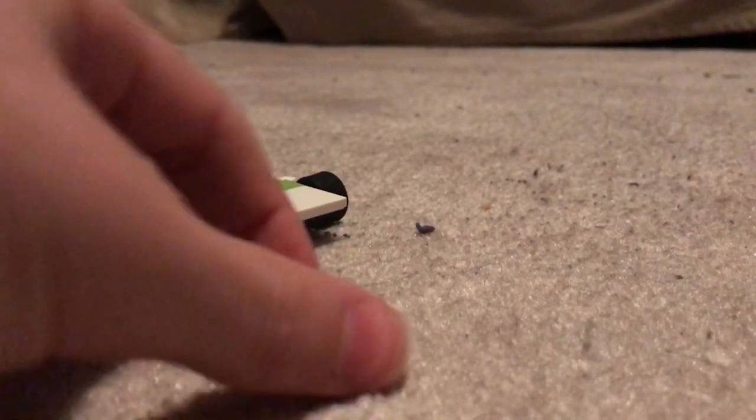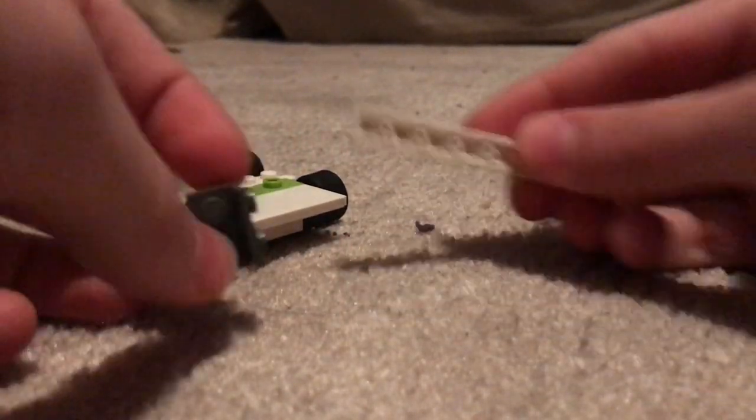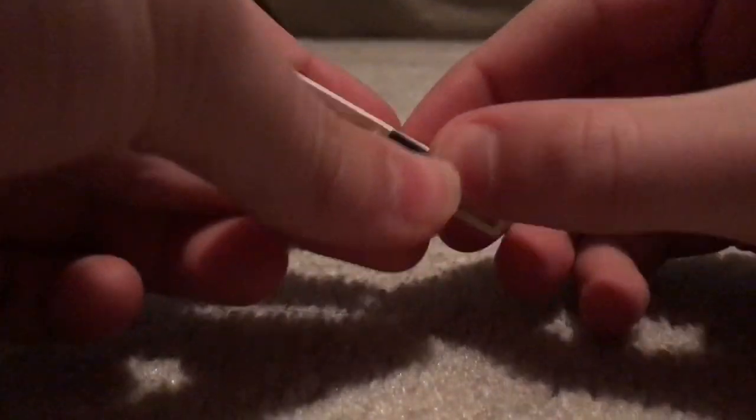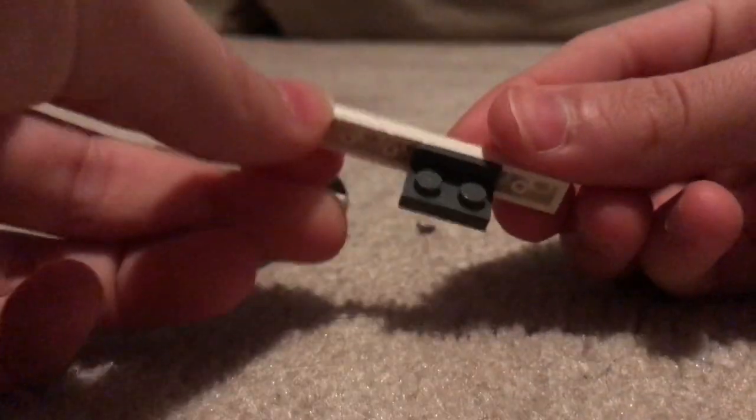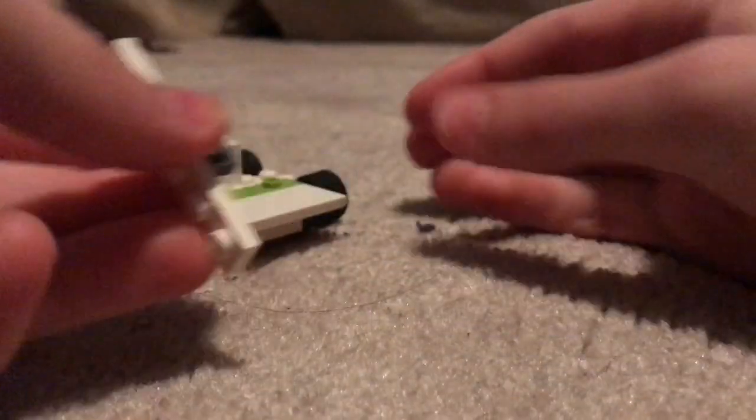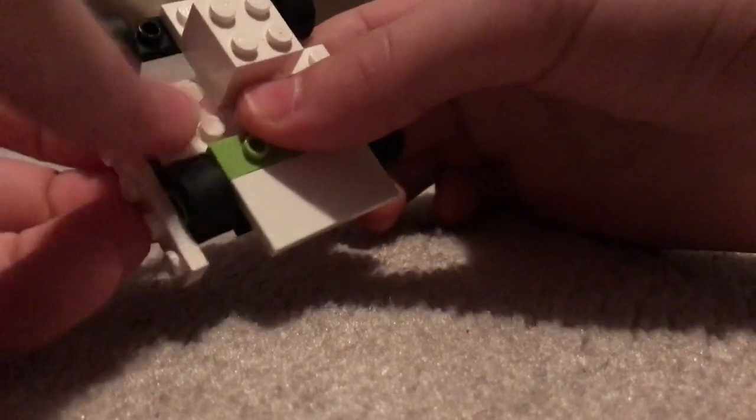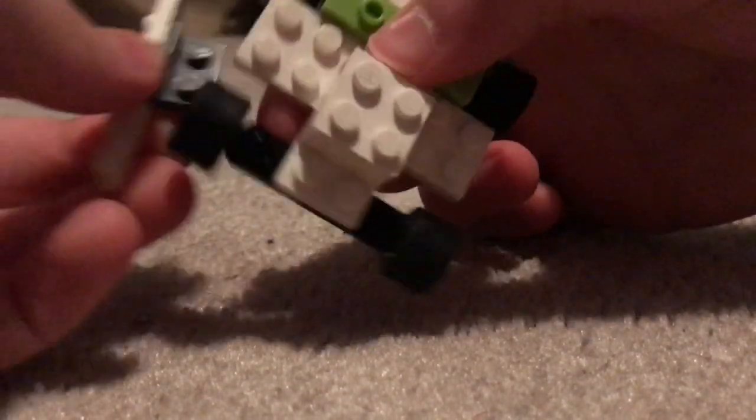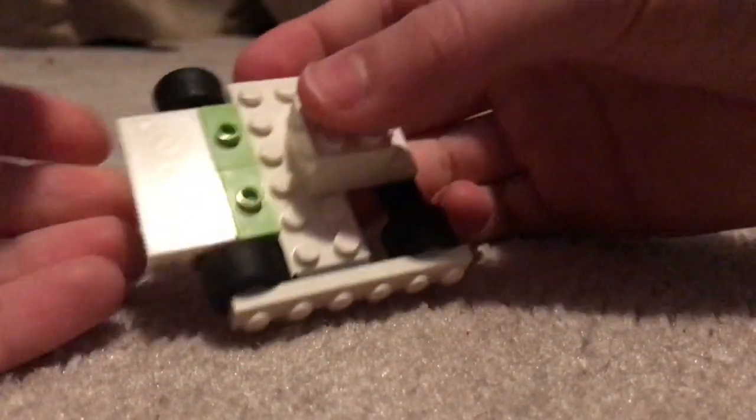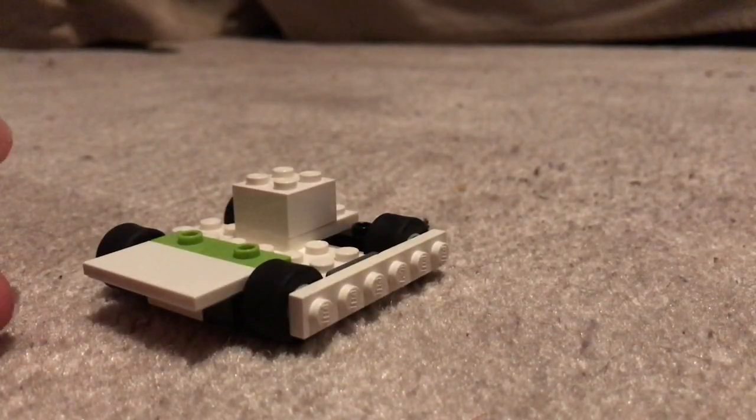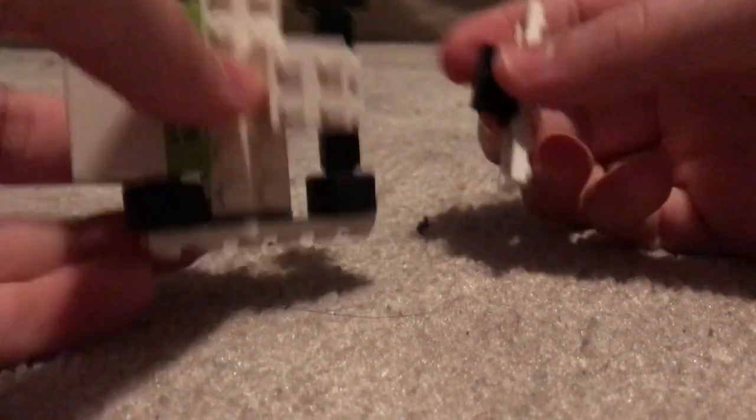Take a piece like this and piece like this. I'm not going to use actual names for them because I don't actually know, but connect it like this, like this, and then you get one side panel. Do the same thing for the other one.